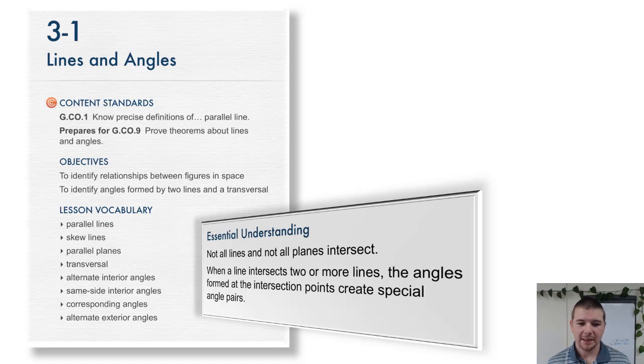The essential understandings: not all lines and not all planes intersect. When a line intersects two or more lines, the angles formed at the intersection points create special angle pairs.